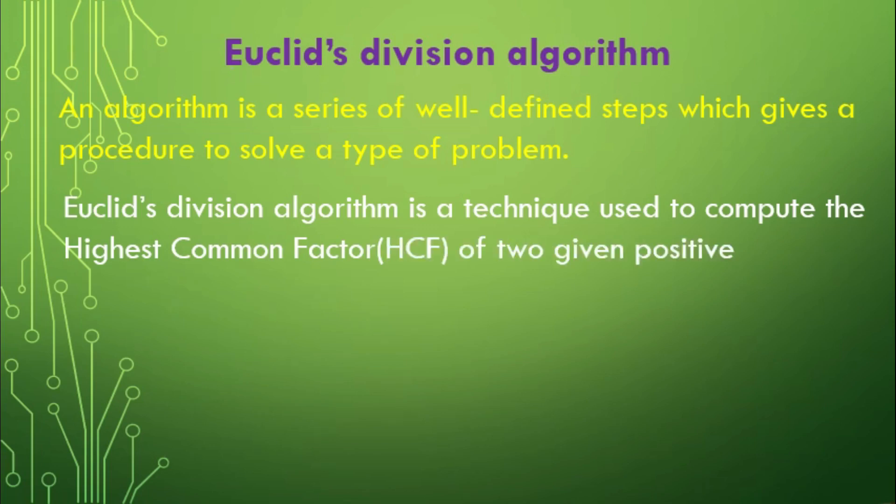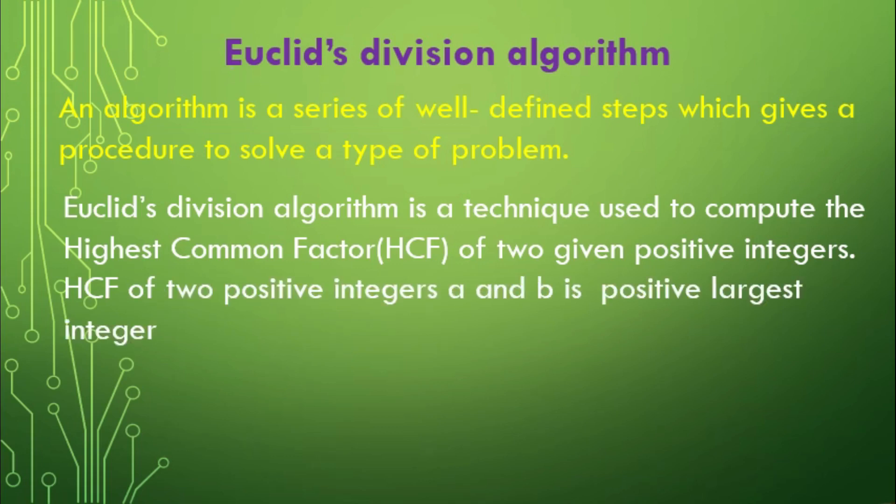The highest common factor of two positive integers A and B is the largest positive integer D that divides both A and B. So, let us state Euclid's Division Algorithm clearly.